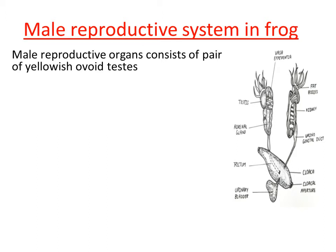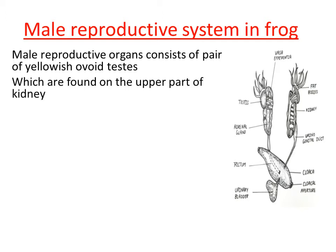These testes are the main organs where the formation of male gametes takes place. Regarding their location, these organs are actually located on the upper part of the kidney. Kidney is an excretory organ, and on the upper surface of the kidney we can see the oval-shaped, yellowish-colored organs — those are nothing but the testes.